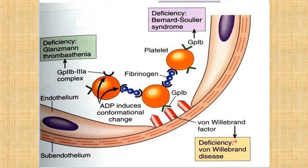Deficiency of von Willebrand factor is called von Willebrand disease. Deficiency of the GP2b3a complex is Glanzmann's thrombasthenia. Deficiency of GP1b (which helps in adhesion) causes Bernard-Soulier syndrome.